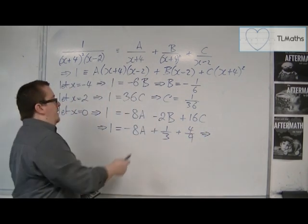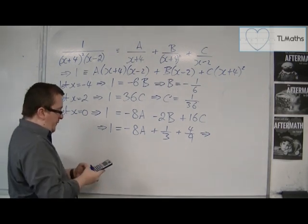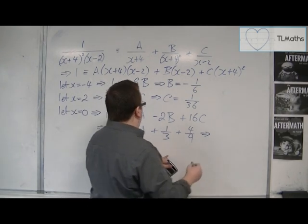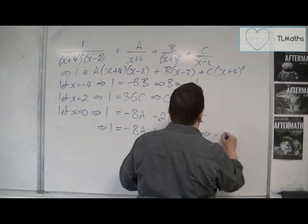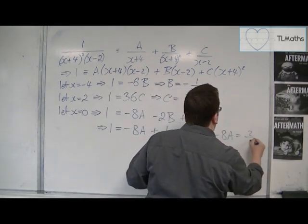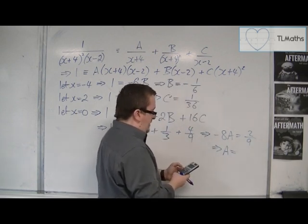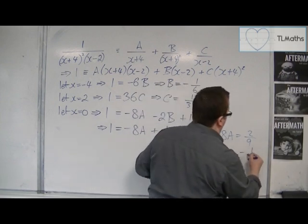So I can subtract 1 third and 4 ninths from both sides. And that gets me 2 ninths. So minus 8a is 2 ninths. And so a, dividing that by minus 8, is minus 1 over 36.